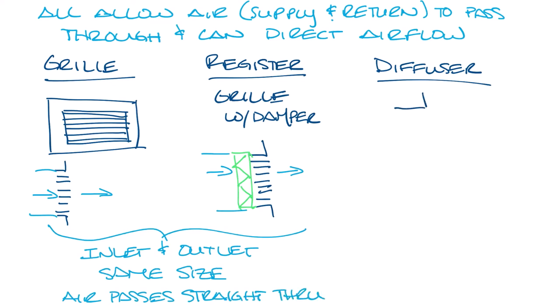Now a diffuser looks something like this. You'll have a backpan with an inlet or a neck, and this is smaller than the face size, which is frequently two by two to fit into a ceiling tile with some sort of face on it.